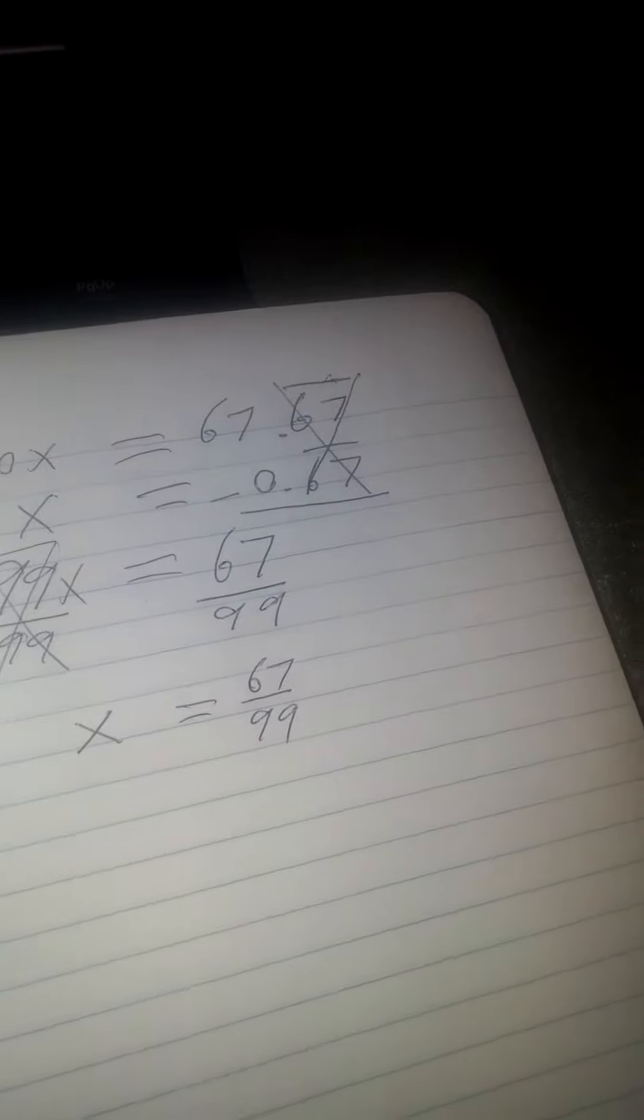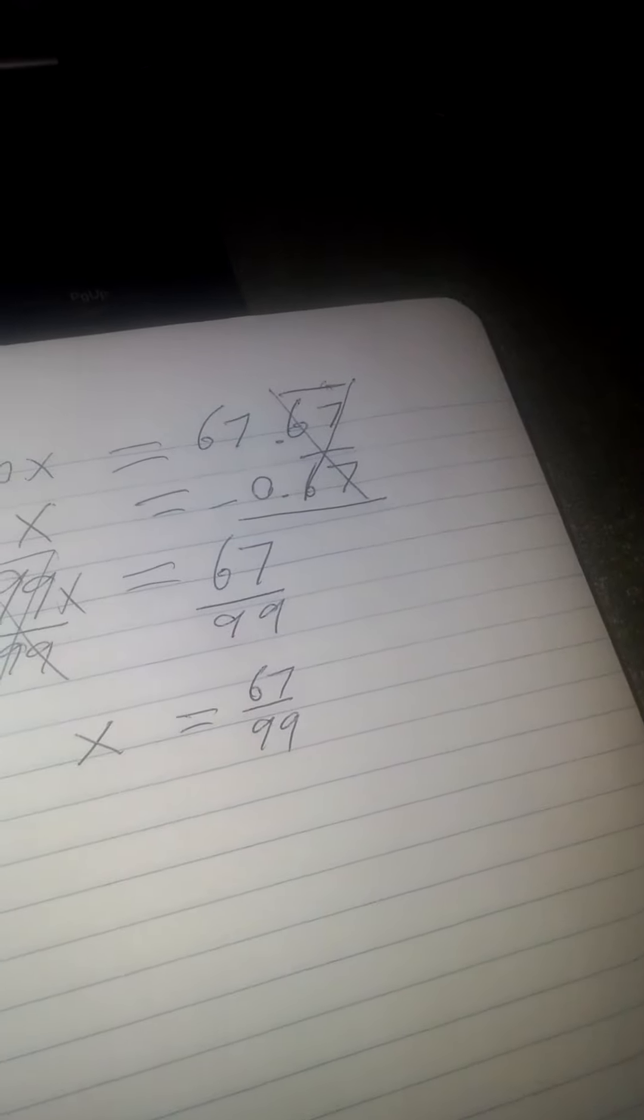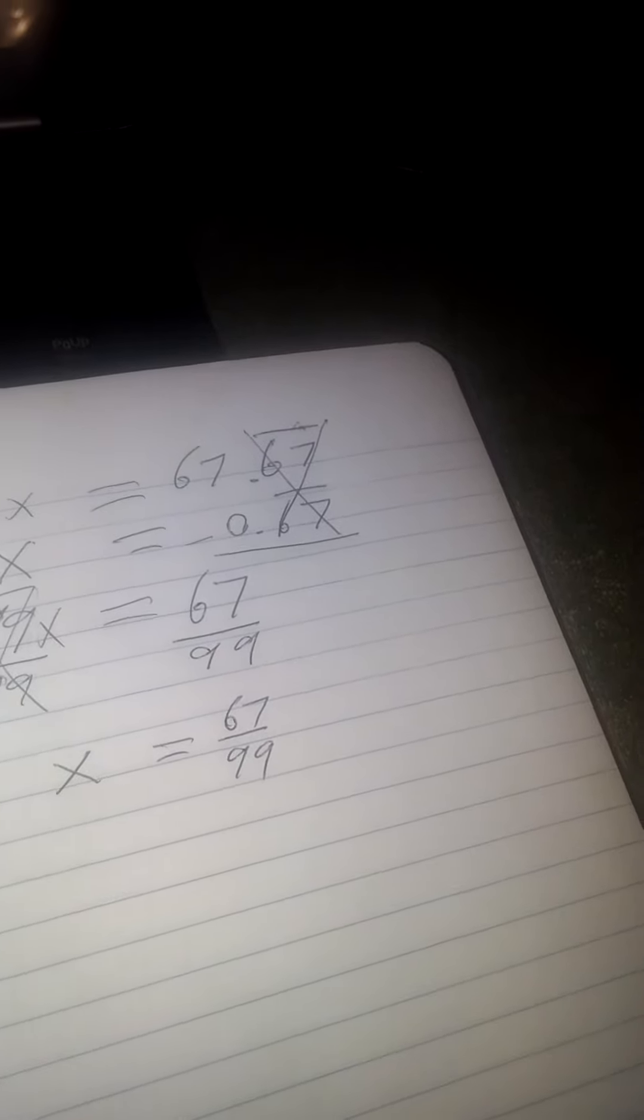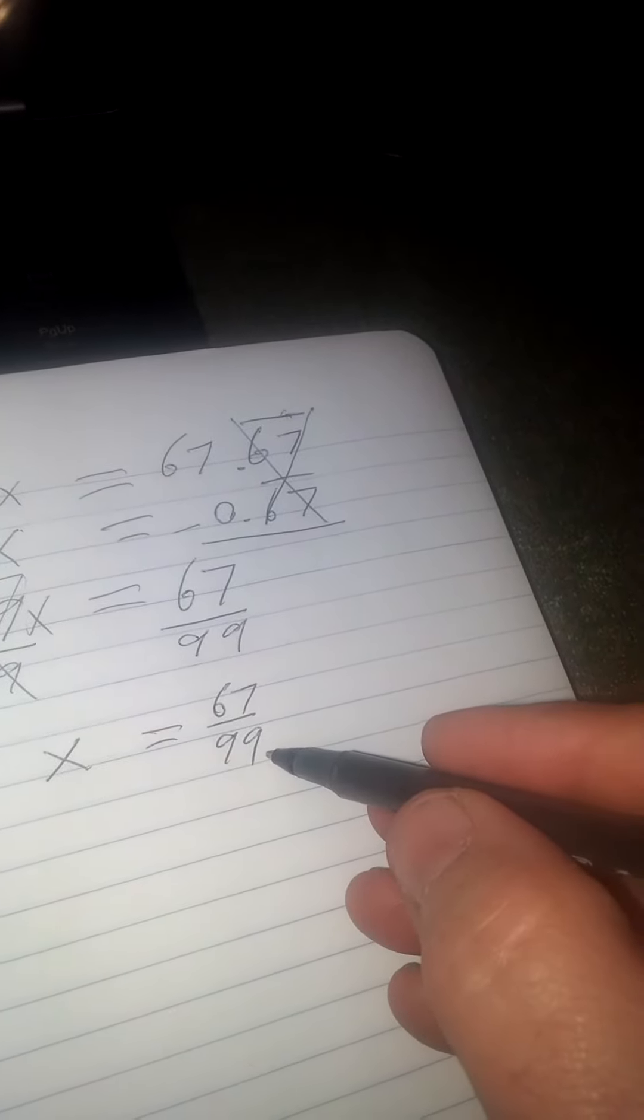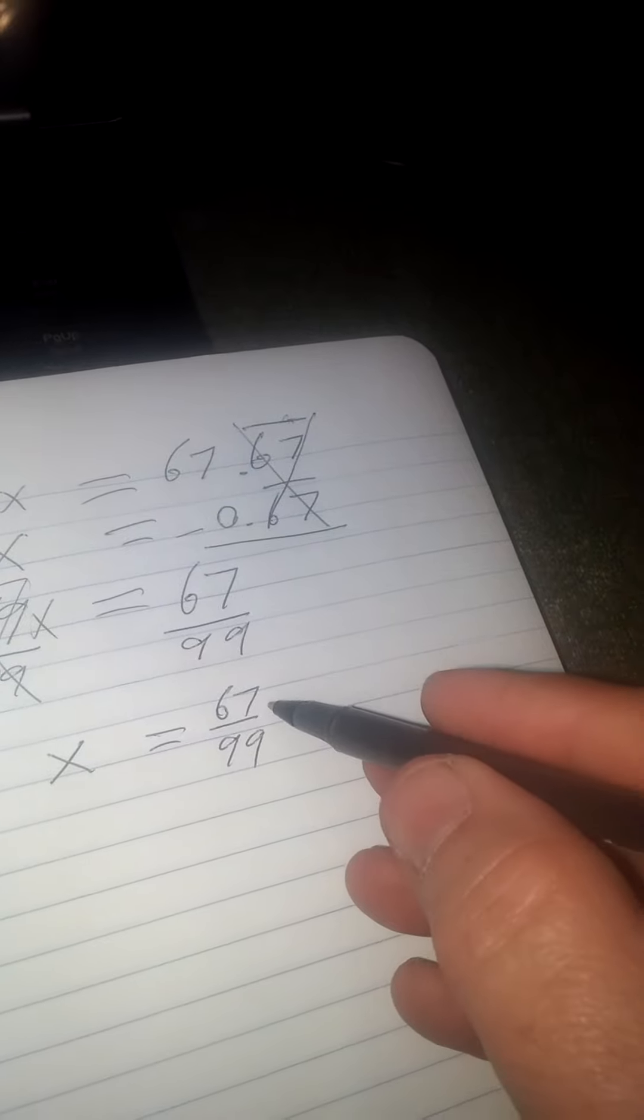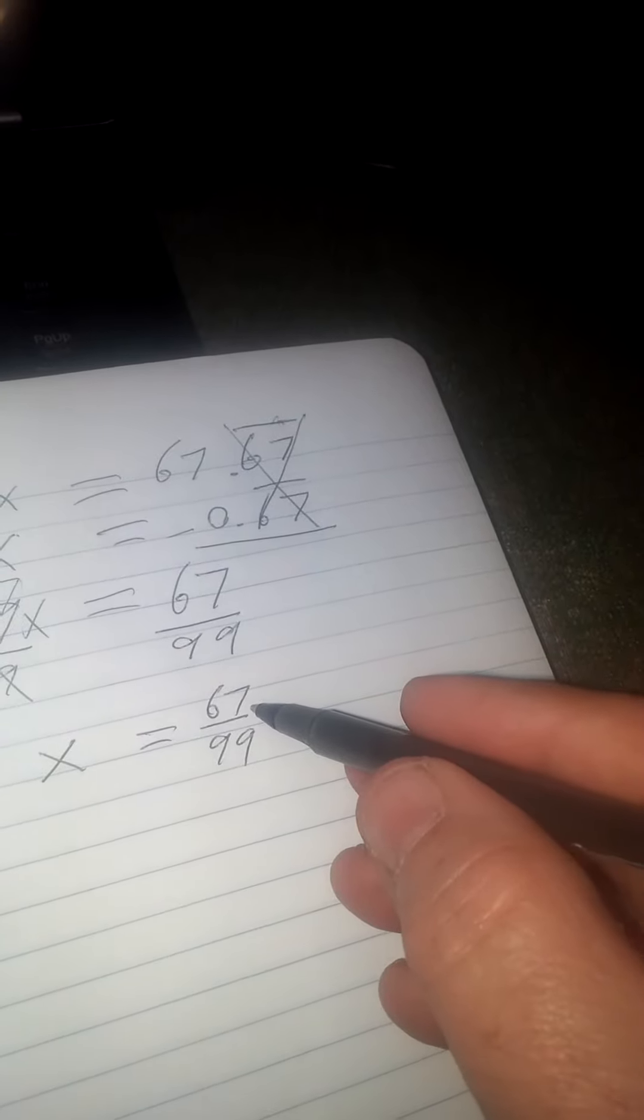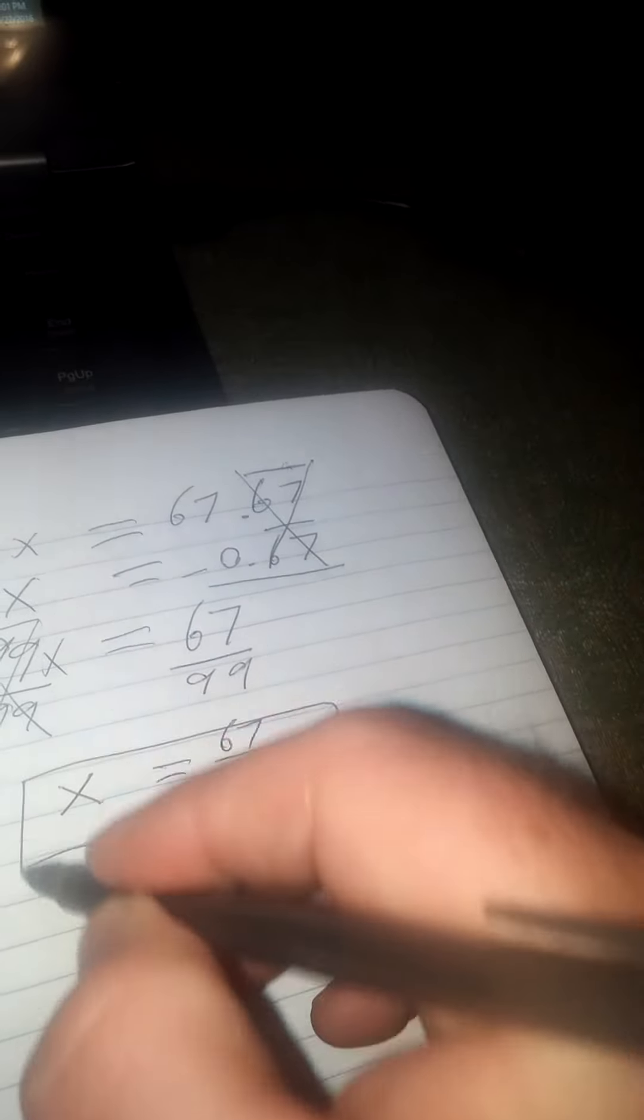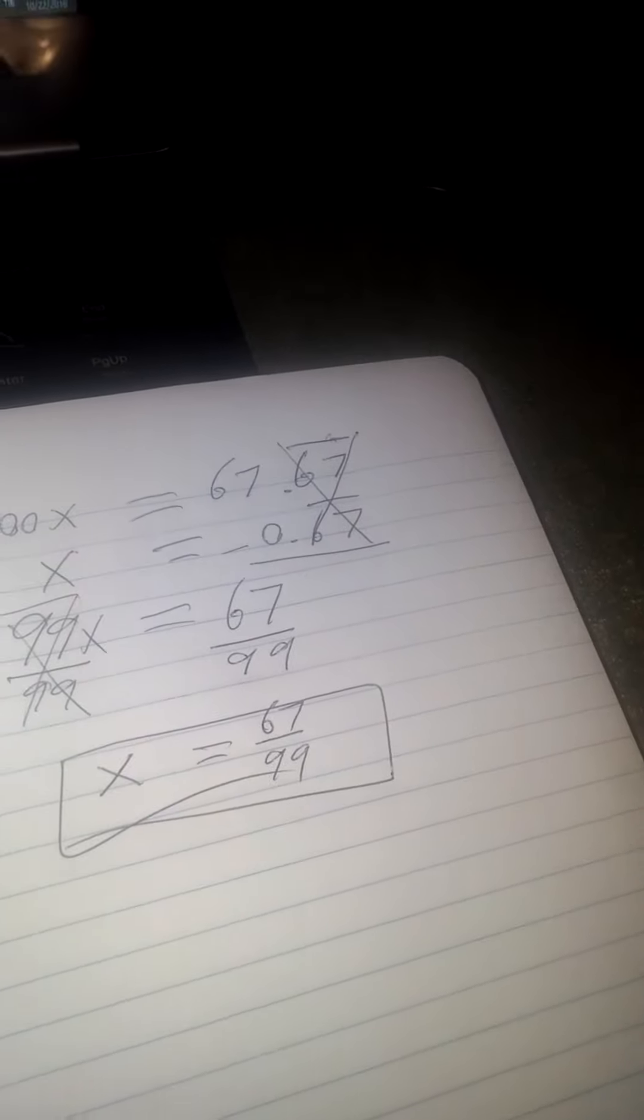Now the last thing I've got to check is whether or not there are any common factors of 67 and 99. And 99 is 3 times 3 times 11. And 67 does not have a 3 as a factor, nor does it have an 11 as a factor. So we are done. x equals 67 over 99.